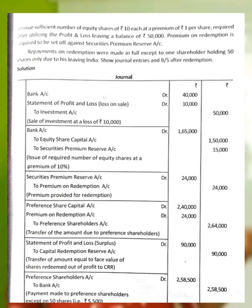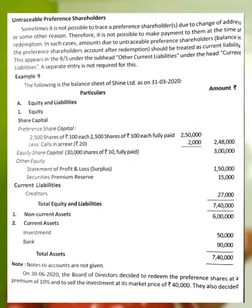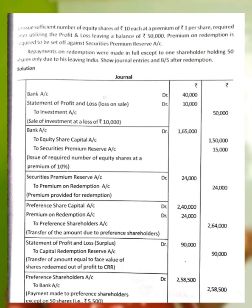Journal Entry 1 — Sale of investment: Bank Account Dr Rs.40,000; Statement of Profit and Loss Account Dr Rs.10,000; To Investment Account Rs.50,000. This records the sale of investment at a loss of Rs.10,000.